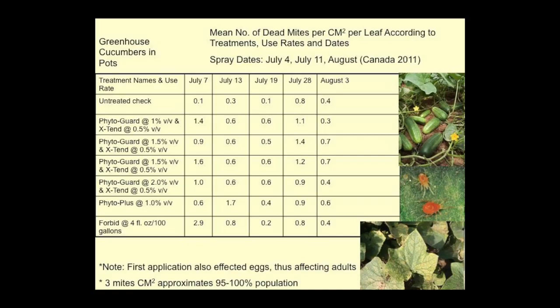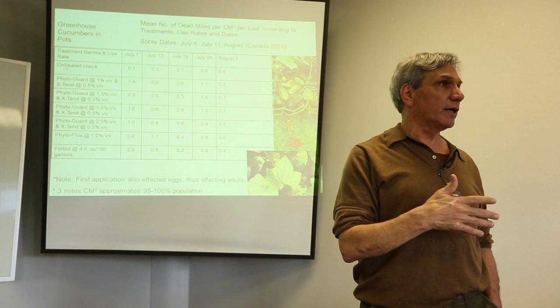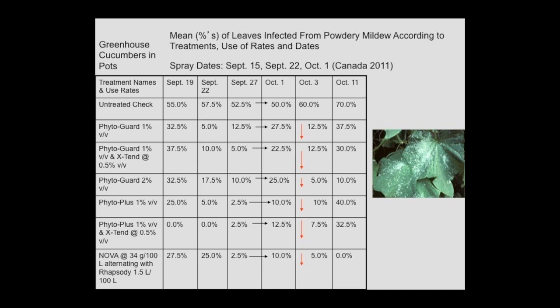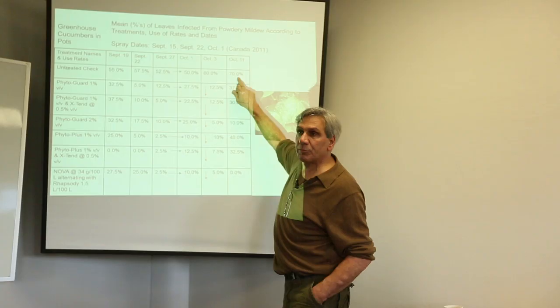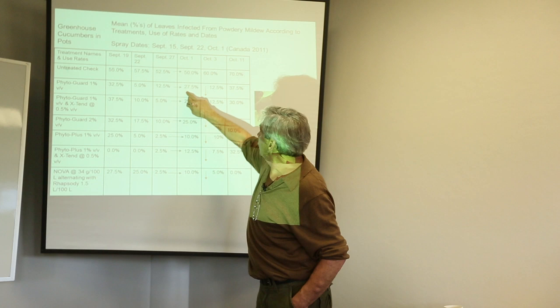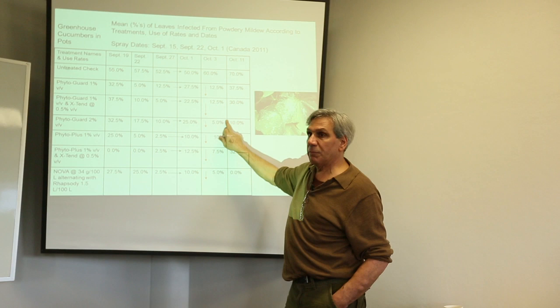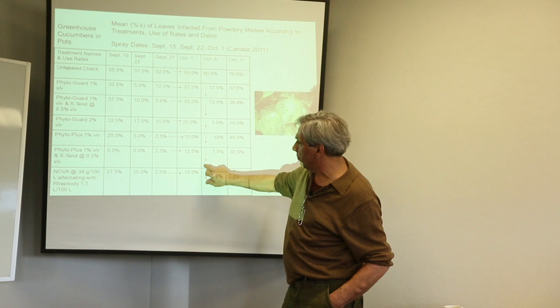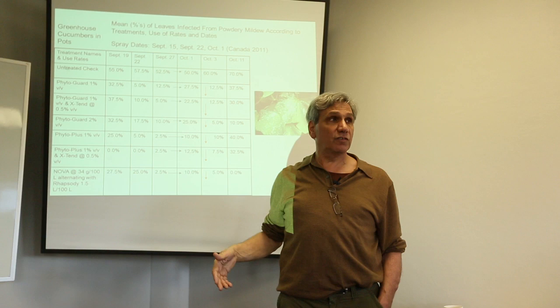On powdery mildew, the percentage of infected leaves in the untreated check went up to 70 percent, while the Phyto Guard-treated plants dropped way down. The data shows there should have been another treatment right about in the middle to keep levels continuously low, because all levels were down very low compared to Nova fungicide at five percent. It's very encouraging to see these kinds of phytoalexins being produced in effect by treatment.